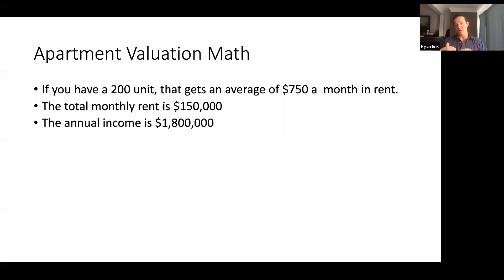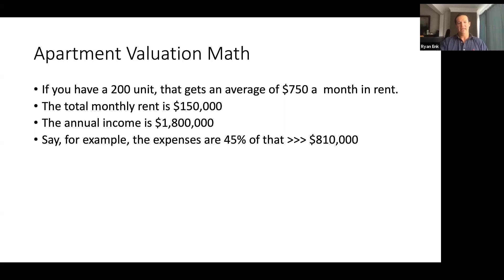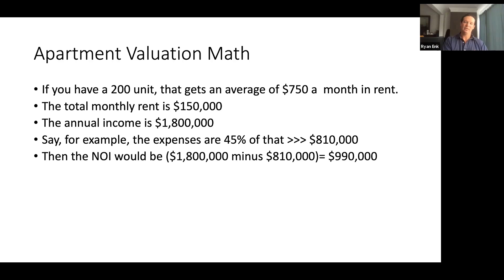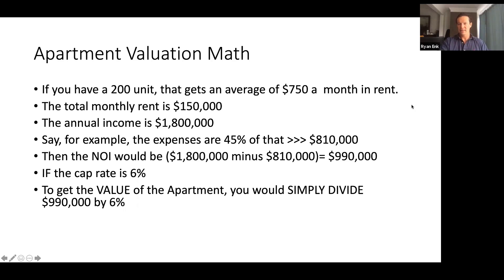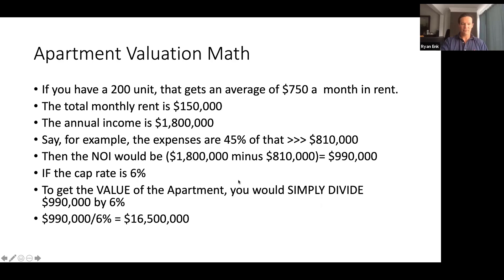Just for the sake of this math, I'm not going to get bogged down into the other income sources like pet fees and application fees. Let's say the apartment makes $1.8 million, and the expenses are about 45% of that — so the expenses are $810,000. That does not include the mortgage. So the NOI would be $1.8 million minus $810,000, which equals $990,000. If the cap rate is 6%, you divide that $990,000 by 0.06, and that gets you the value: $990,000 divided by 6% is $6.5 million. So this 200-unit apartment is worth $6.5 million.